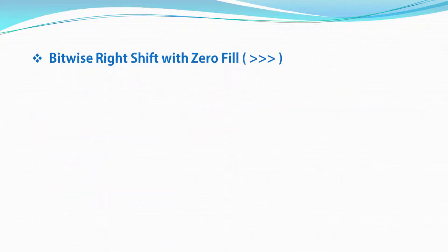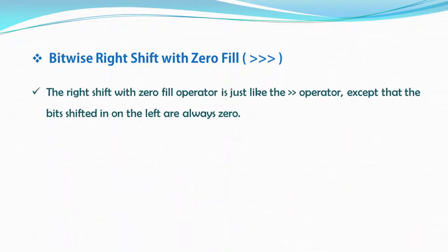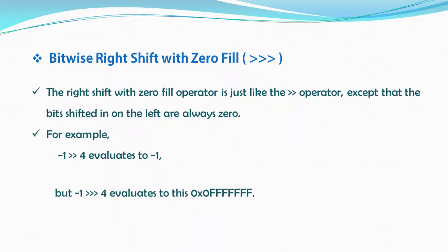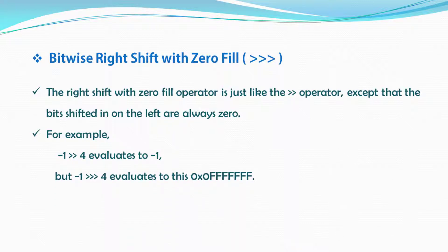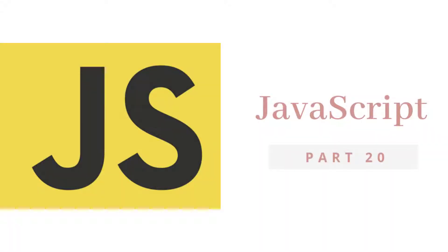Then we have the last bitwise operator, which is right shift with zero fill. The right shift with zero fill operator is just like the right shift operator except that the bits shifted in on the left are always zero. For example, minus one right shift four evaluates to minus one, but when you say minus one with the right shift with zero fill operator and specify four, it evaluates to a different result.